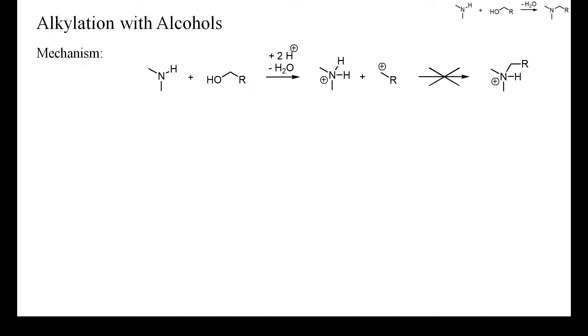Alcohols can act as electrophilic alkylating reagents in the presence of acids, which either convert the alcohol into a carbocation or just protonate the hydroxyl group and thereby convert it into a good leaving group.